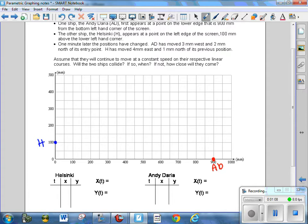Then it says, One minute later, the positions have changed. The Andedoria has moved 3 millimeters west and 2 millimeters north. The Helsinki has moved 4 millimeters east and 1 millimeter north. Assume they will continue to move at a constant speed on their respective linear courses. Will the two ships collide? If so, when? If not, how close will they come?